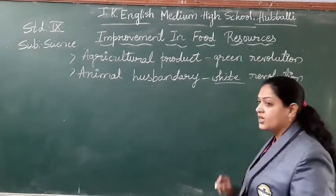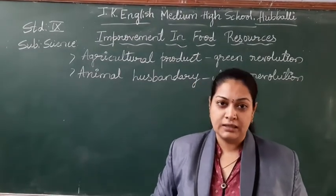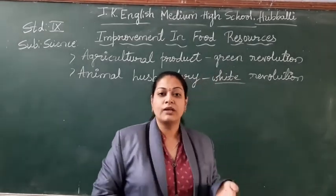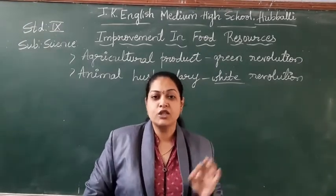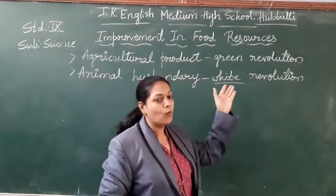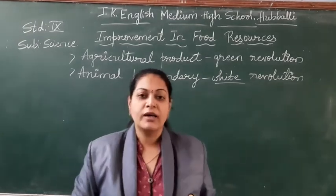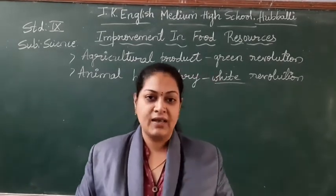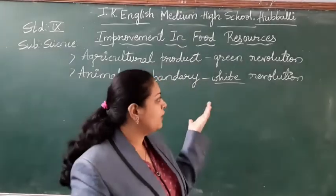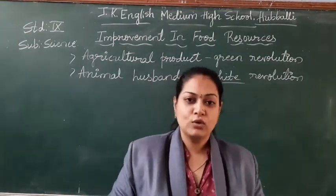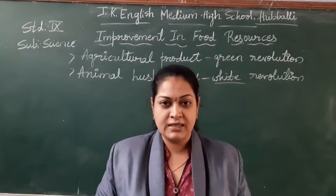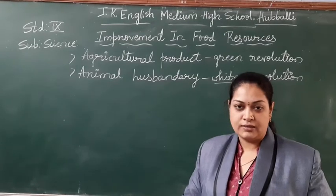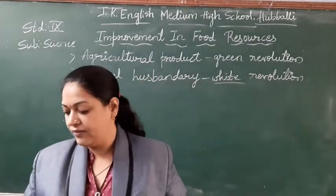They also wanted to improve the milk productivity — the quality and quantity of milk. As we consider milk a whole food, it is rich with calcium, protein, and so many things. So they started the white revolution, which is about milk productivity. In the field of agriculture as well as animal husbandry, from the day the food problem started, they have been trying to improve the food resources. Nowadays, science and technology has improved so much that we have increased and are getting more crops and animal products.